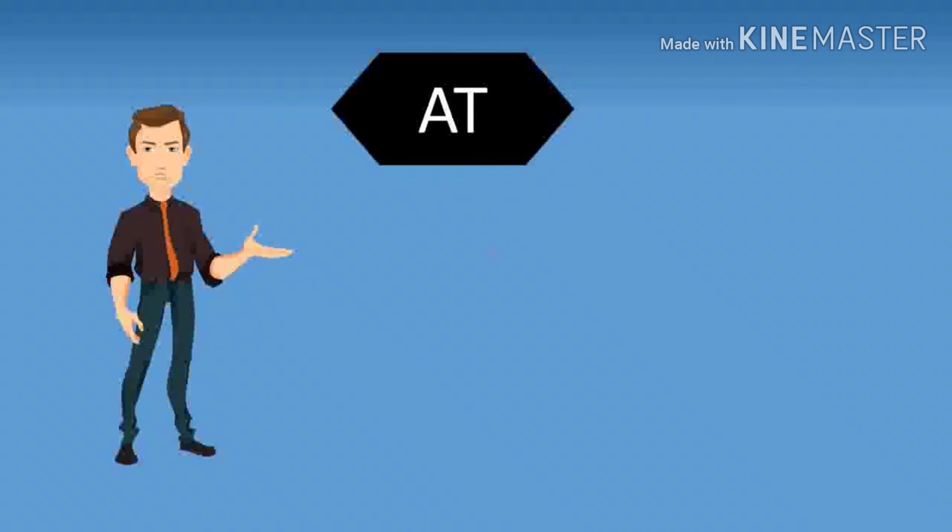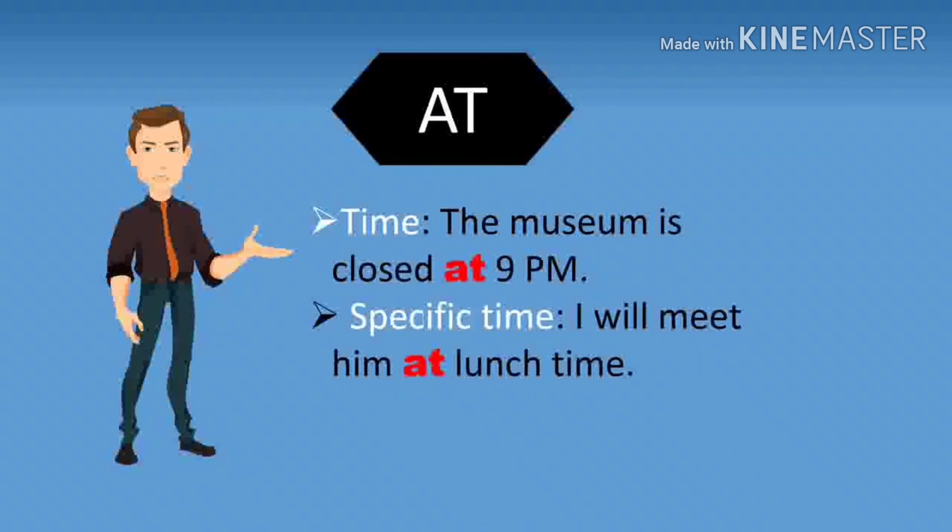Next preposition is on. On here is name of day. For example, on Wednesday. And then, it is also used for date. For example, June 8, 2020. Jadi, untuk tanggal.